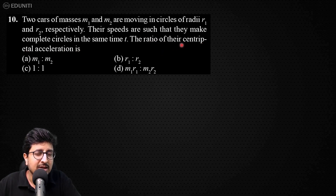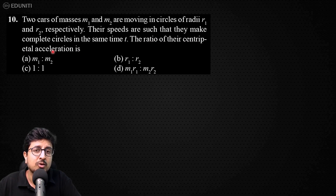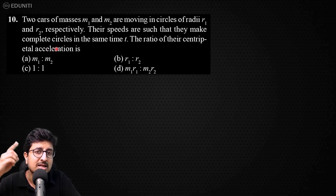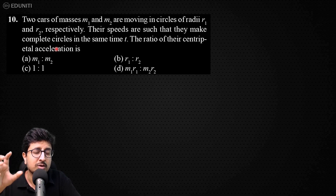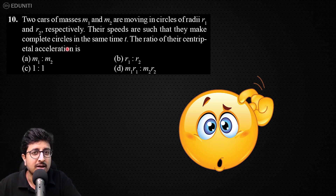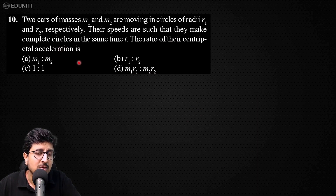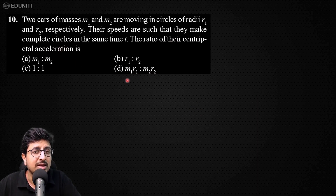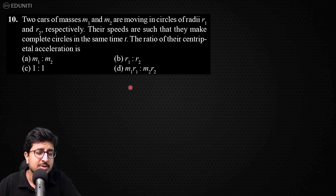लेकिन बच्चा यहाँ पे क्या mistake करता है कि centripetal के बाद 'acceleration' word को पढ़ता ही नहीं है। अगर पढ़ भी लिया तो उसके मन में 'force' word ही चल रहा होता है और वो centripetal force का ratio solve कर देता है। और यहाँ पे उस गलत सोच से जो answer आता है वो भी option में होता है — तो बच्चा बहुत खुश होकर उसे tick कर देता है।